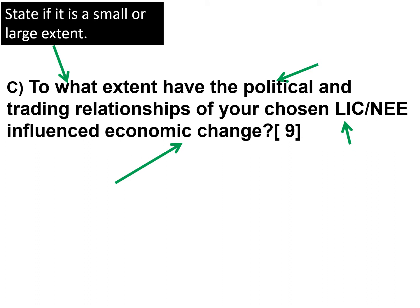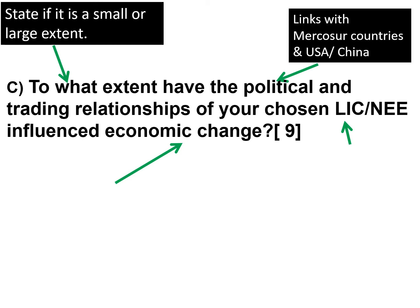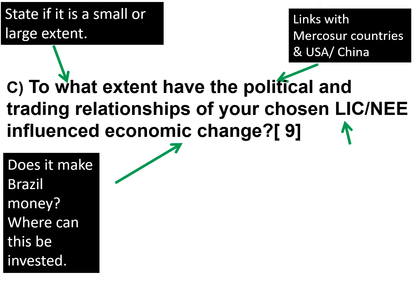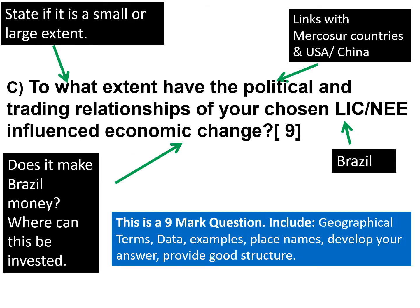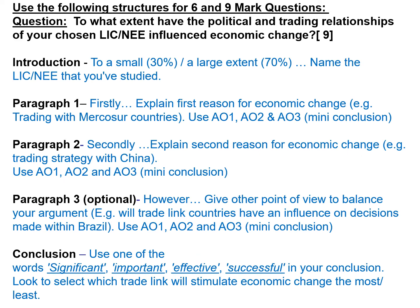The question is: to what extent have the political and trading relationships of your chosen LIC or NEE influenced economic change? State whether it's a small or large extent — give a number, maybe out of 10 or a percentage ideally. Consider the political links: Mercosur countries, links with USA, links with China. Economic change means money, trade, and business. Our LIC/NEE is Brazil — a newly emerging economy. This is a nine-mark question, so include all those things shown in the blue box.